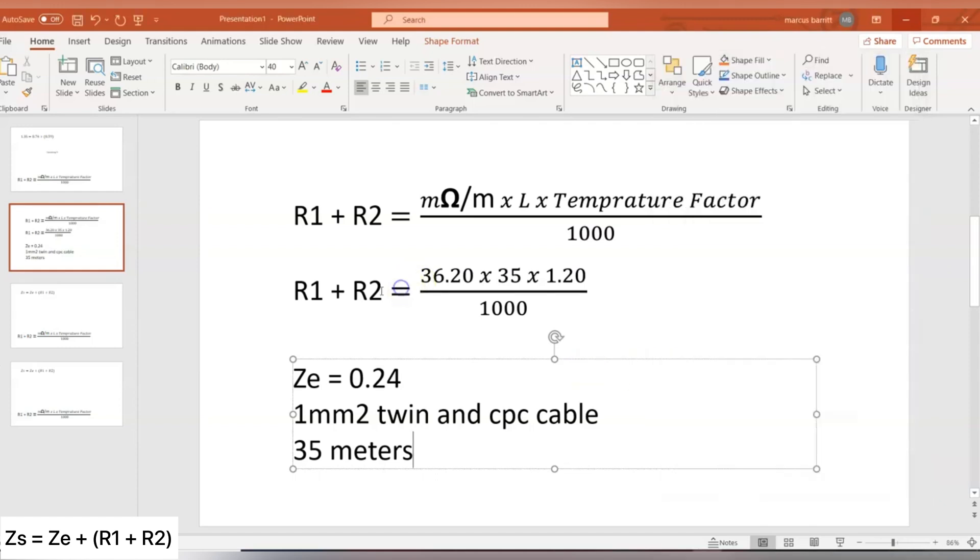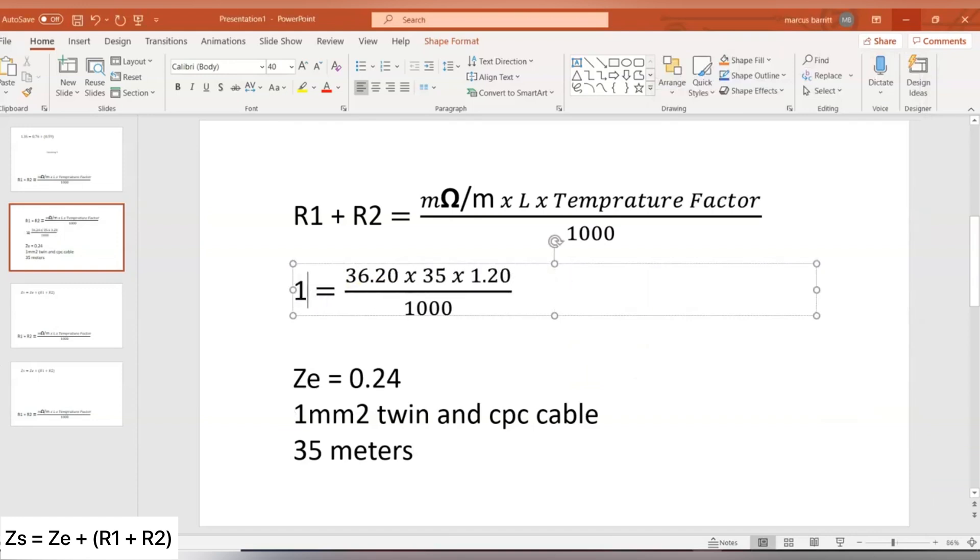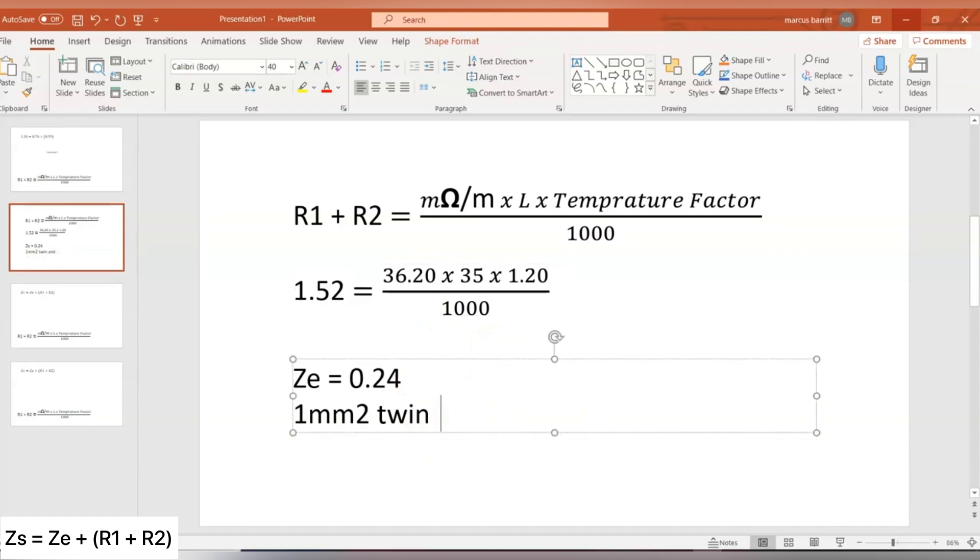So actually R1 and R2 for that circuit is 1.52 ohms. Now, we've got our R1 and R2 now, so get rid of this, we've got our ZE and we've got now our calculation R1 plus R2, 1.52 ohms. Now, think back to how we can calculate our ZS, so we have ZS equals ZE plus R1 plus R2.